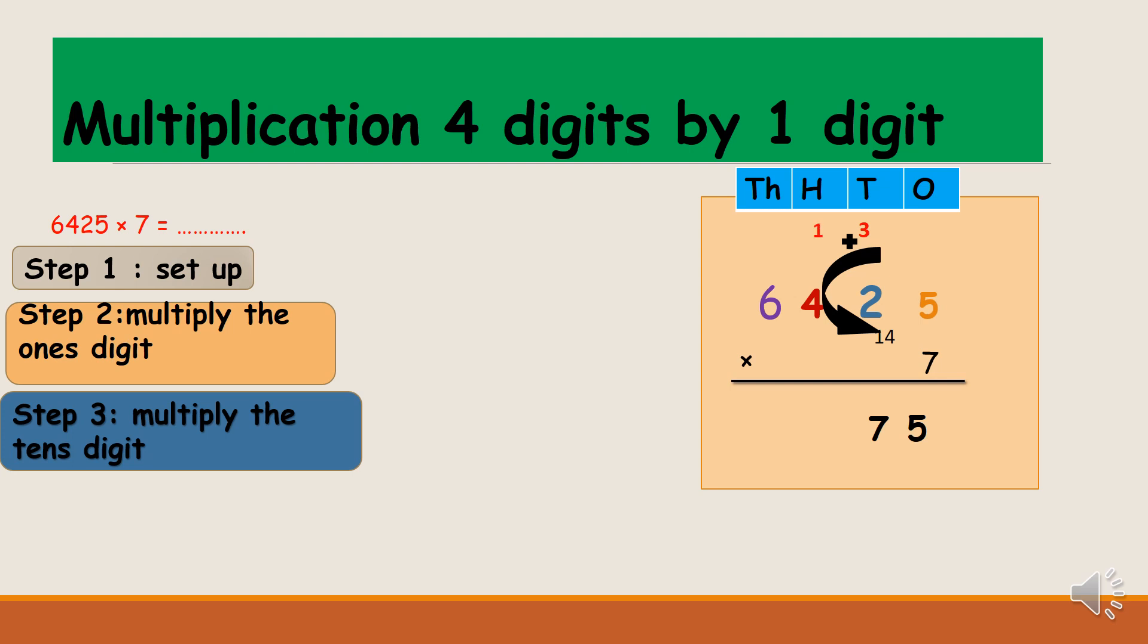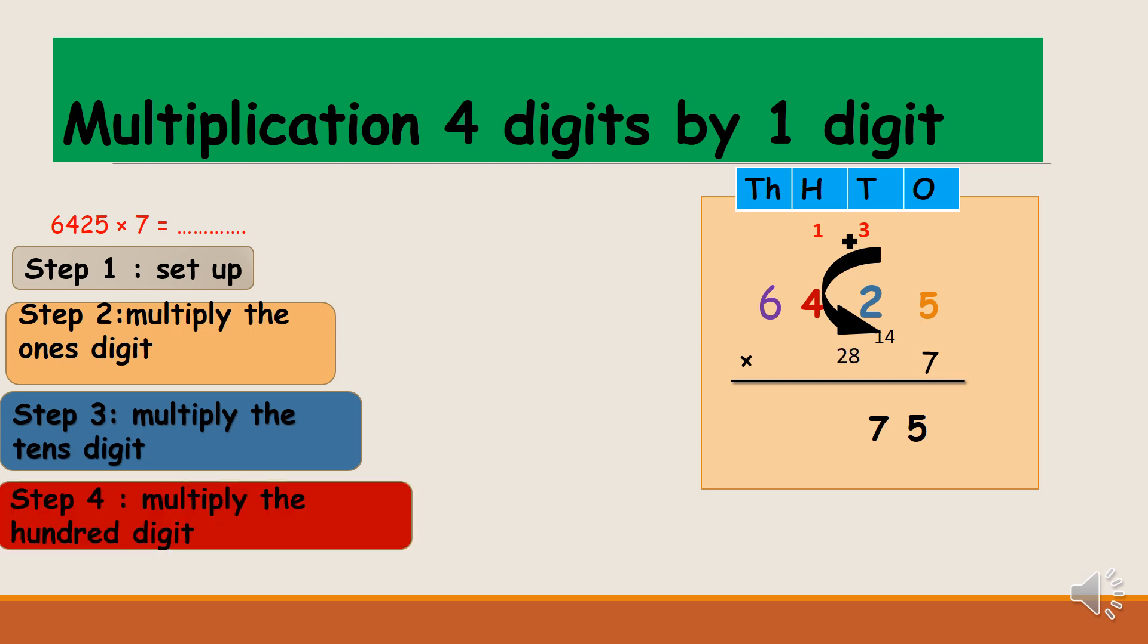Now after multiplying the tens column, we will multiply the hundreds digit. Seven times four is 28. Now 28 plus one is 29. 29 is a double digit. We put nine down and two at the top of the thousands column.